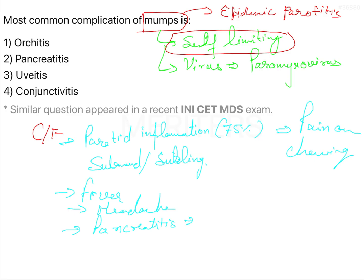Pancreatitis is inflammation of the pancreas. Orchitis is also very commonly seen in mumps — this is inflammation of the testicle, i.e., testicular inflammation. Pneumonia can also occur.